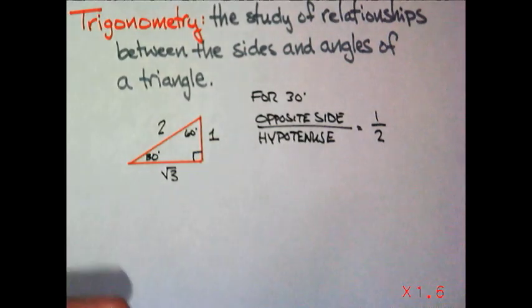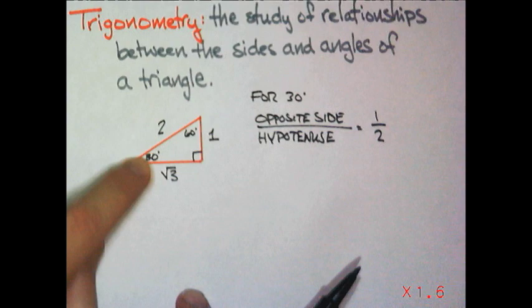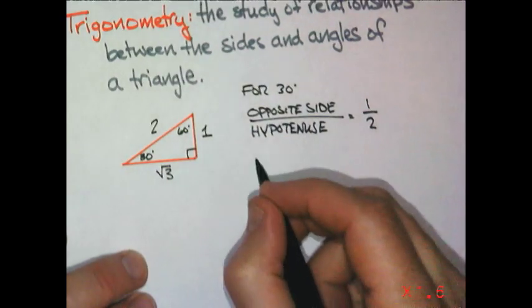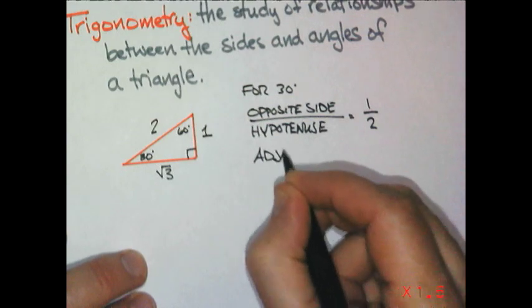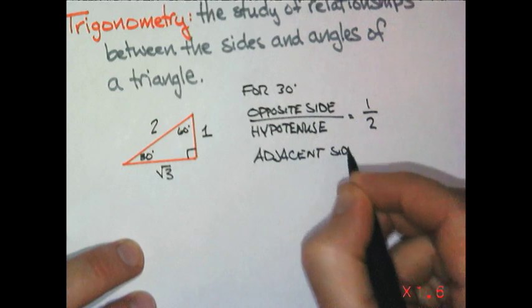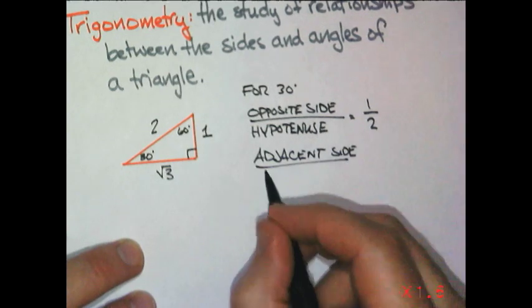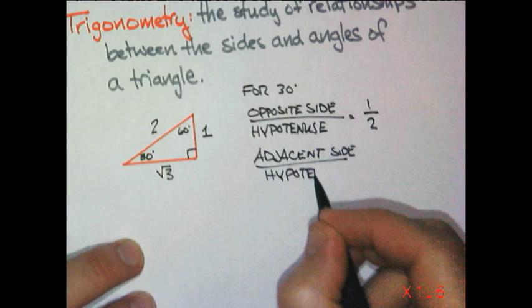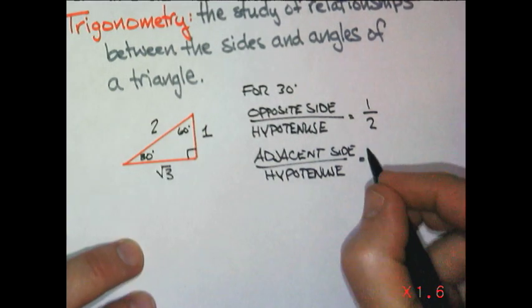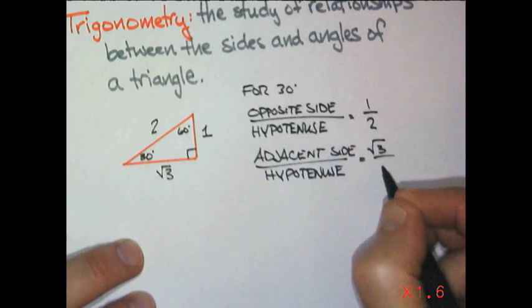Another comparison, if I'm at 30 degrees, I can compare the side that's next to me compared to that hypotenuse. We're going to call the next to me, we're going to call that the adjacent side. In this case, it would be root 3 compared to 2.